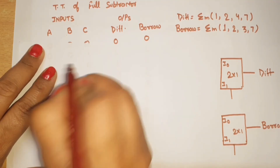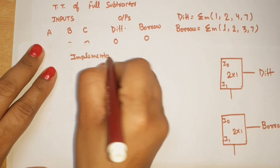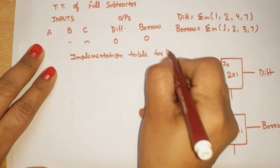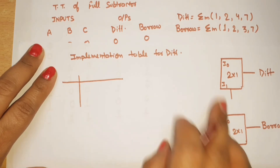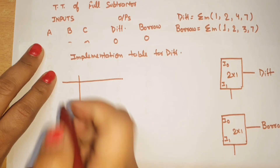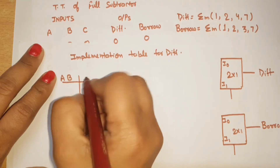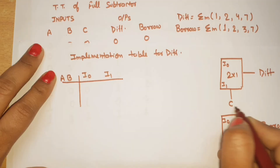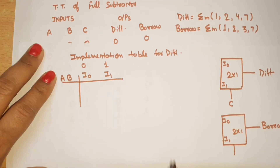Now we will build the implementation table for difference. We have input variables A and B feeding the MUX inputs, and the selection line is C. If C is equal to 0, I0 will be selected. If C is equal to 1, I1 is selected.